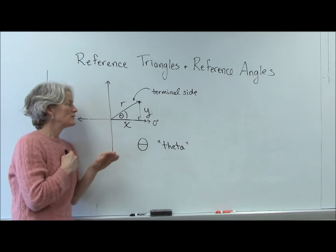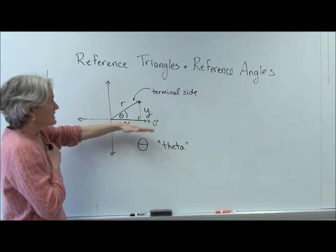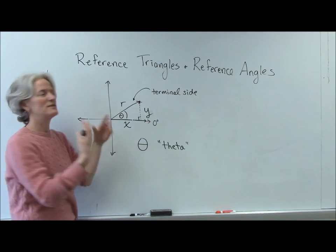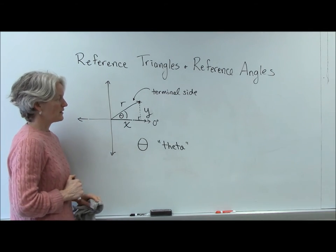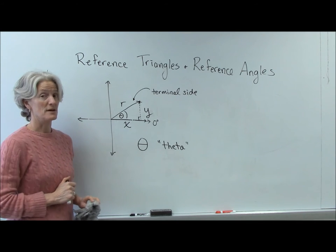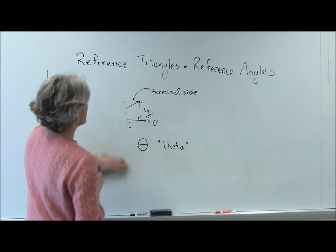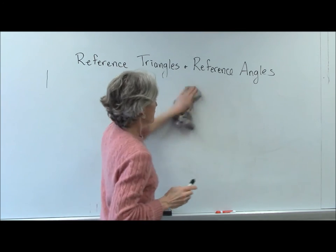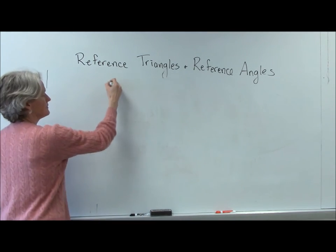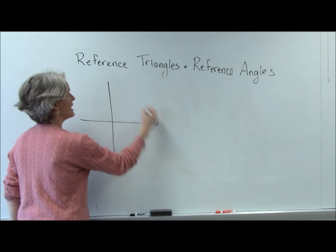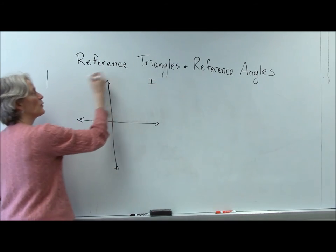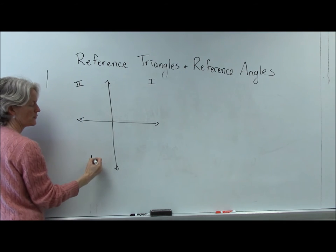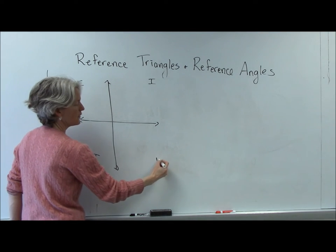Now, it's a little confusing. Sometimes theta is used to designate your rotation. Sometimes it's used to designate the reference angle. But you usually can figure out what it means from the context. So let's try it in a couple other quadrants. We have to review our quadrants too, right? We're going to be talking about quadrants a lot in trigonometry. So we have quadrant one, quadrant two, quadrant three, quadrant four.